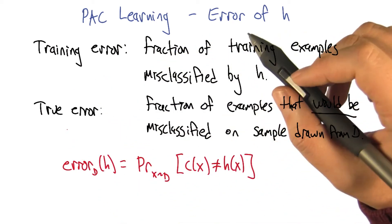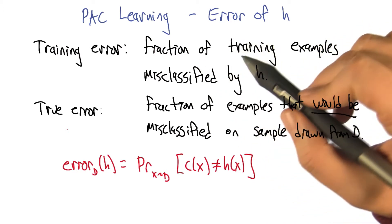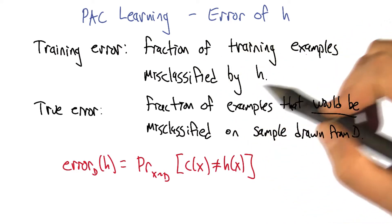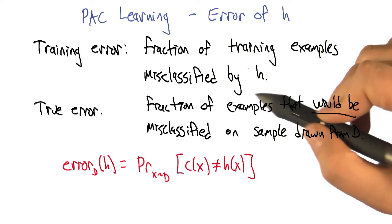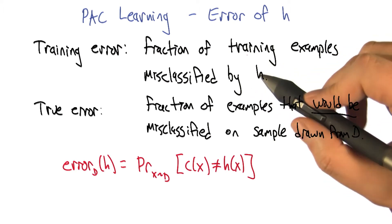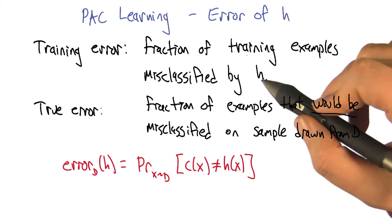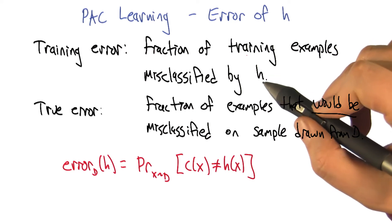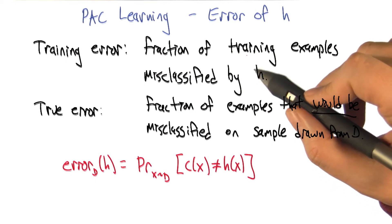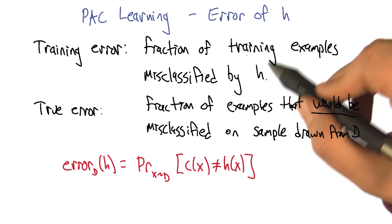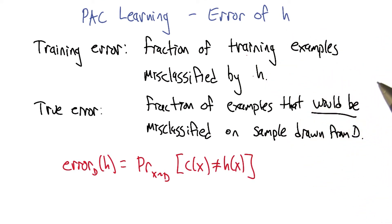So the training error is, on the training set, what is the fraction of those examples that are misclassified by some given hypothesis H? Now, H could be different from the target concept. The target concept ought to have a training error of zero, but some other hypothesis H might have some error. Sure, that makes sense.